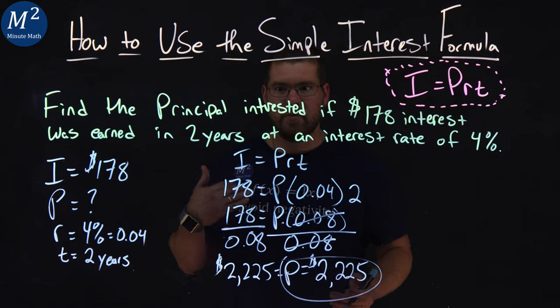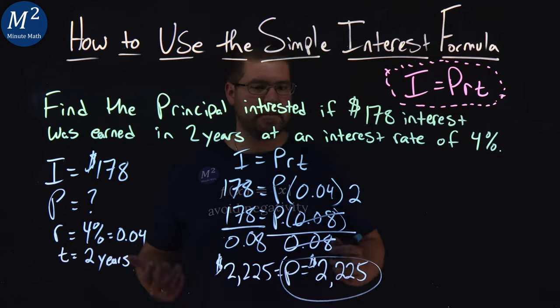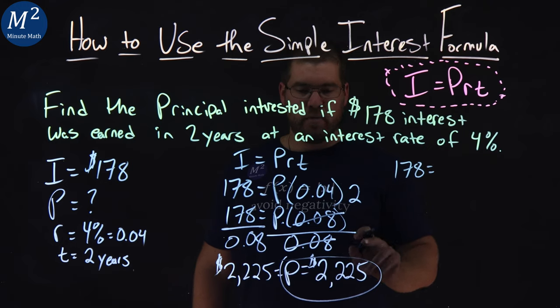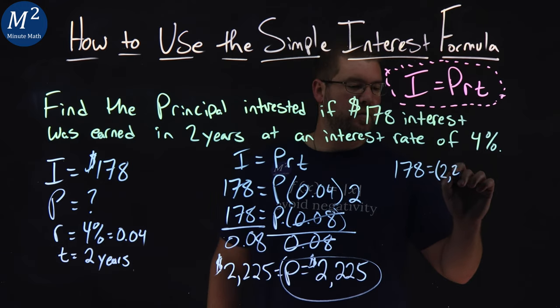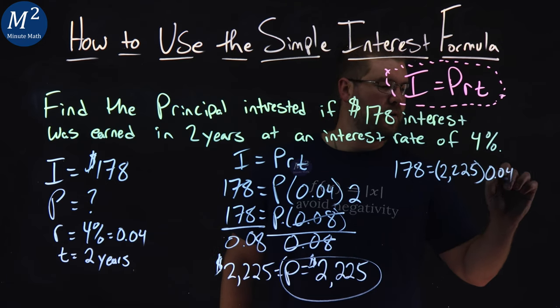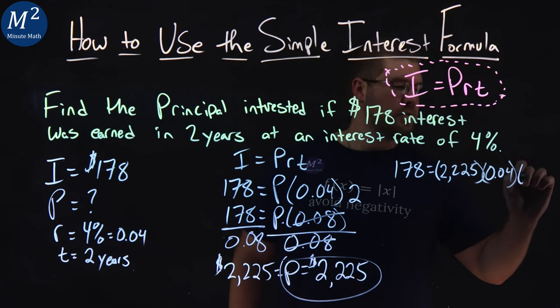Now we can check that by plugging this back in and seeing if it's equal. We have $178 equals our principal, which we found, $2,225, times our interest rate, 0.04, times time, which is two.